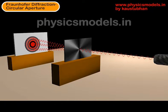In this video, I'll explain about the Fraunhofer diffraction happening through a circular aperture. A circular aperture is just a word for a round hole.